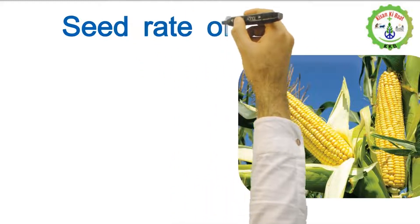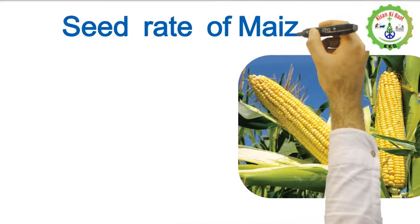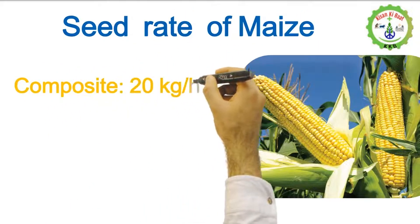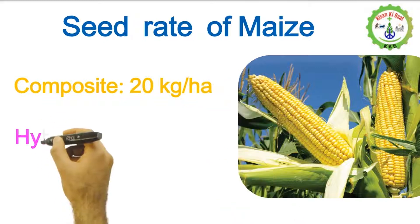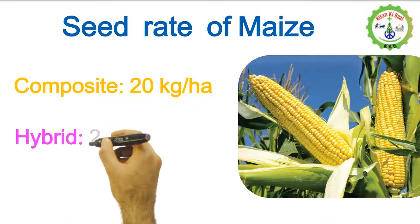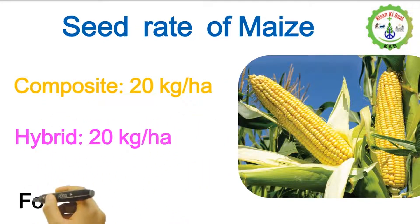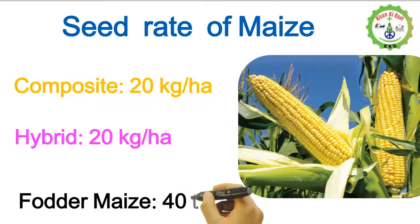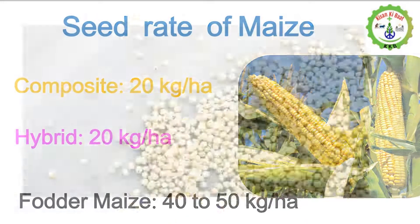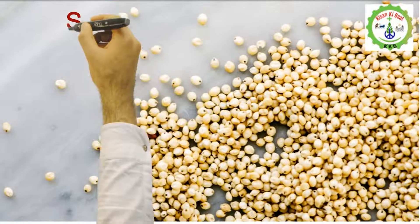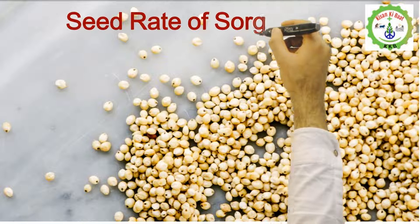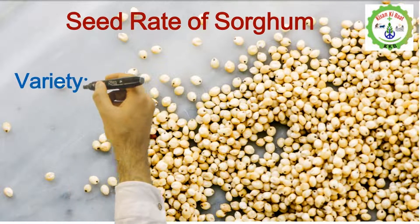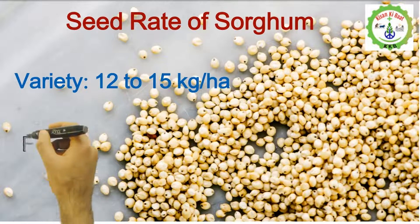Seed rate of maize: synthetic and composite variety — 18 to 20 kilograms per hectare; maize hybrid — 18 to 20 kilograms per hectare; fodder maize — 42 to 50 kilograms per hectare.